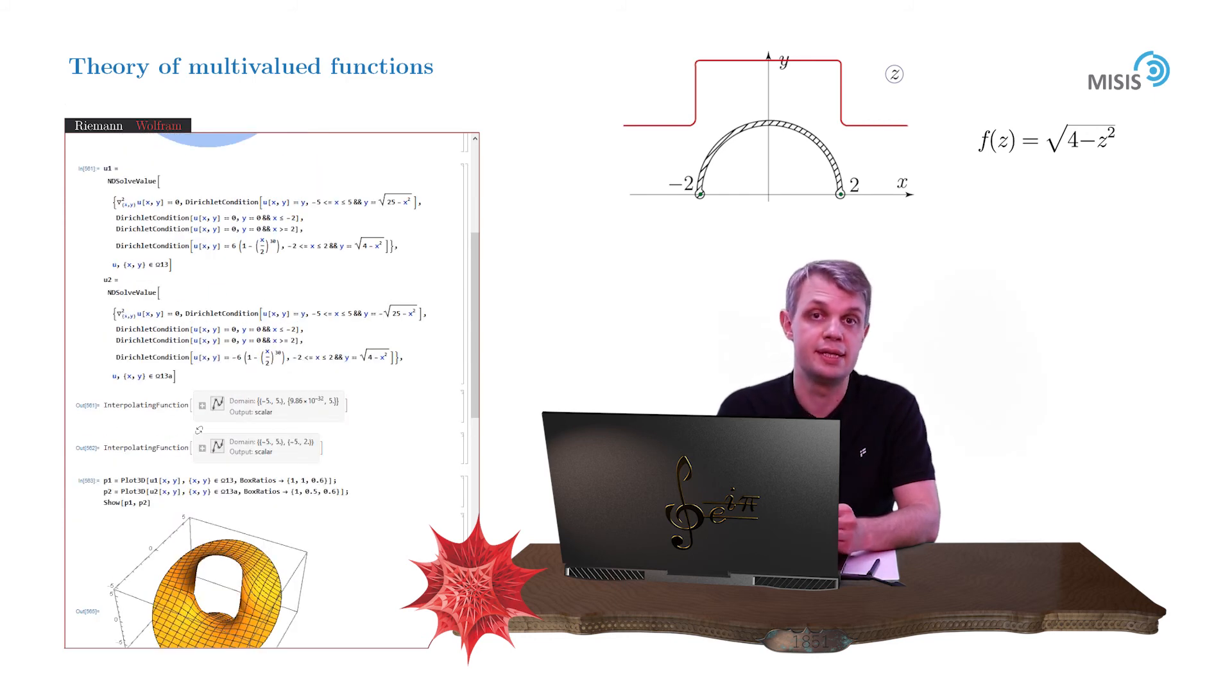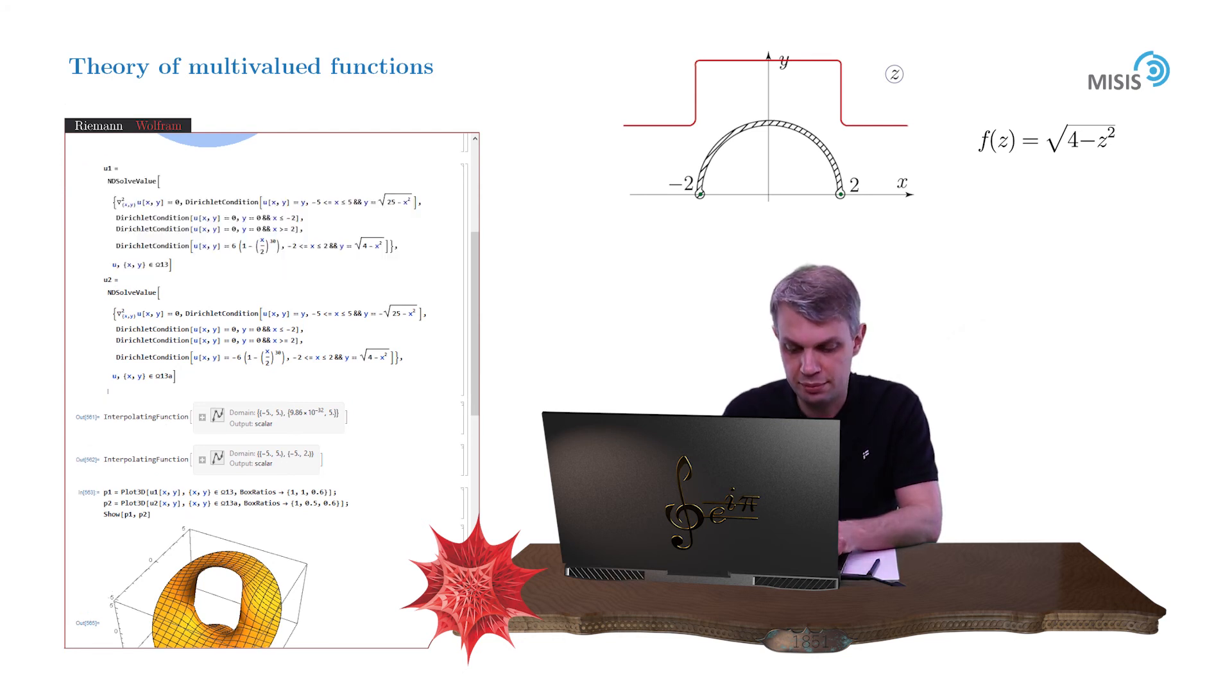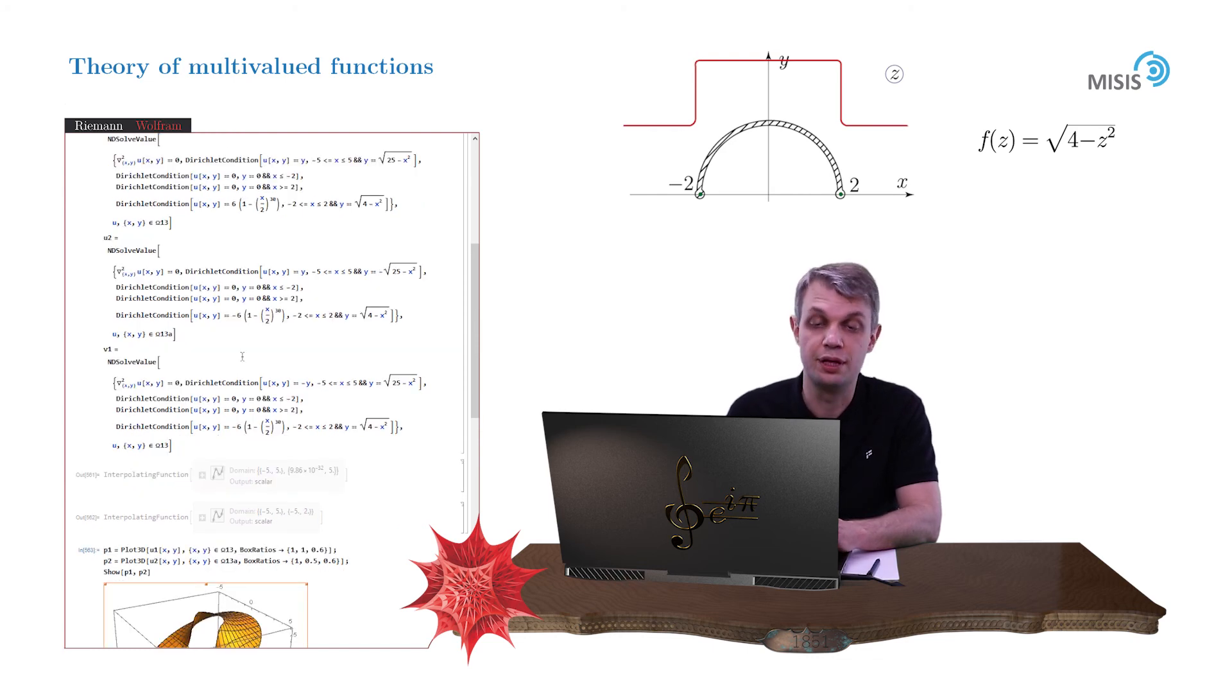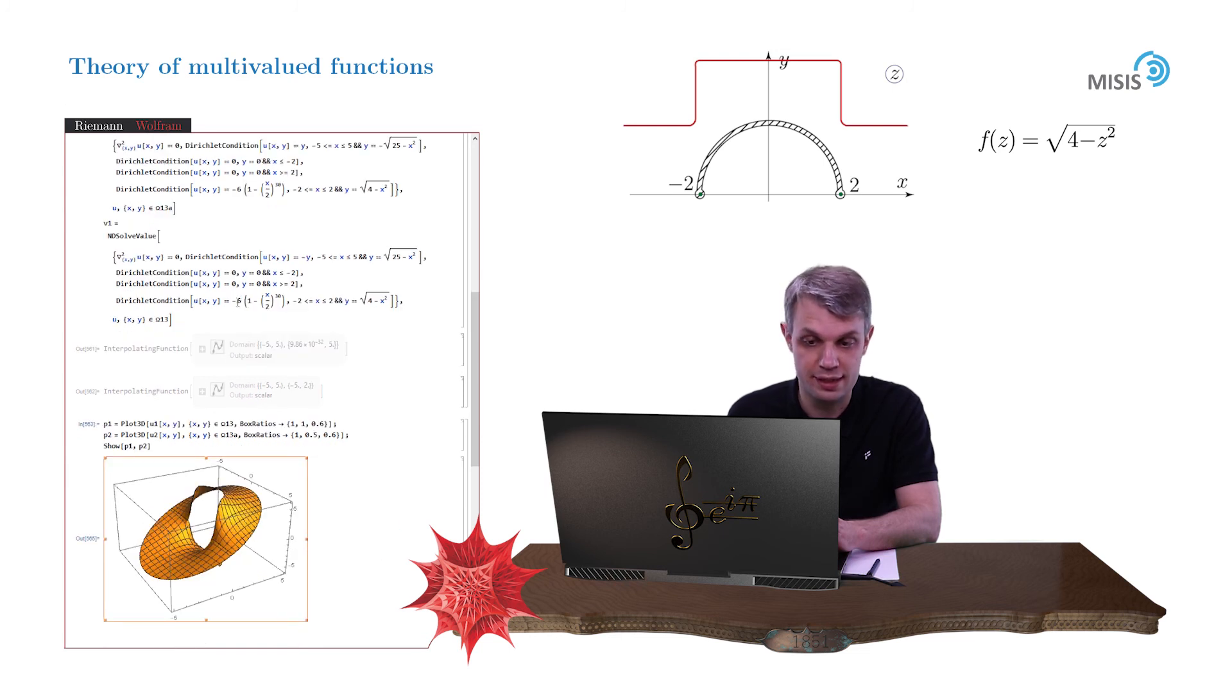And then we build a second Riemann sheet. The only difference from the first one is the different inclination and slightly different boundary conditions. So here we go, the upper half. It's almost identical to the upper half of the first sheet. We call it function V1, but we change the inclination at the outer edge and we change the boundary condition. Because the upper bank of its branch cut should be glued to the lower bank of the branch cut of the first Riemann sheet. Hence, minus sign here.